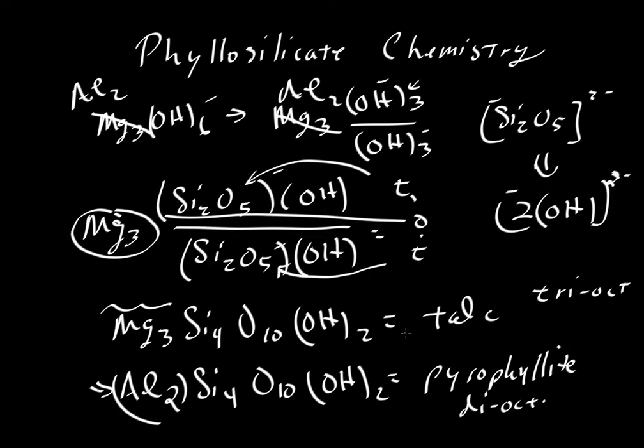Let's look at some other variations on this theme. So we have the TOT layers, and then some weak van der Waals bonds, and then another TOT layer, and then some weak van der Waals bonds. We'll try one more little triplet here, TOT.